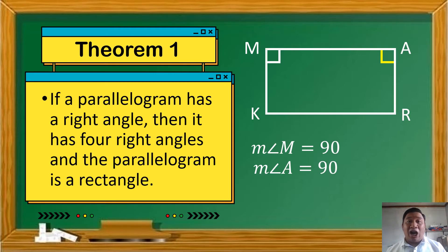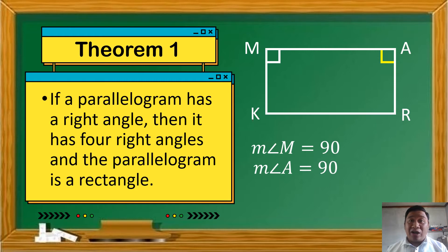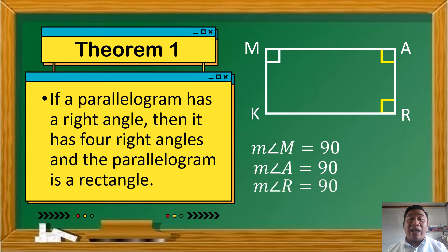Doon naman tayo kay angle R. Ang relationship ni angle M at ni angle R — they are opposite angles. Since we are talking about parallelogram, any two opposite angles are congruent. Kung si angle M measures 90 degrees, ibig sabihin si angle R then measures 90 degrees — right angle din siya.